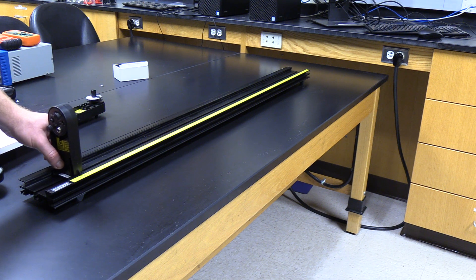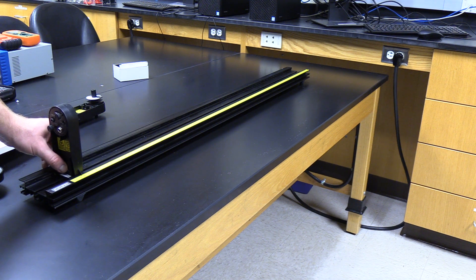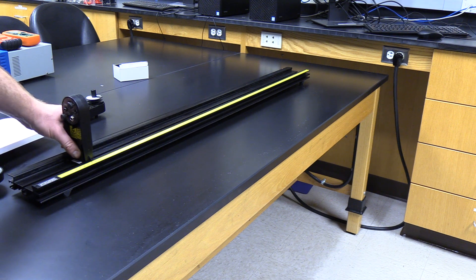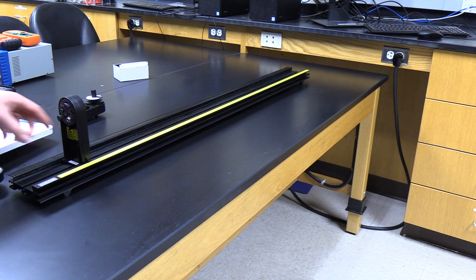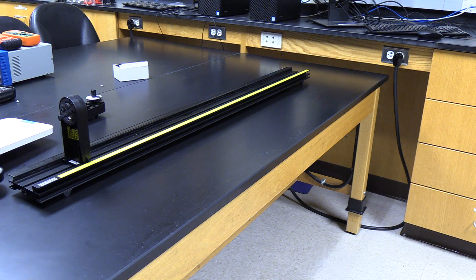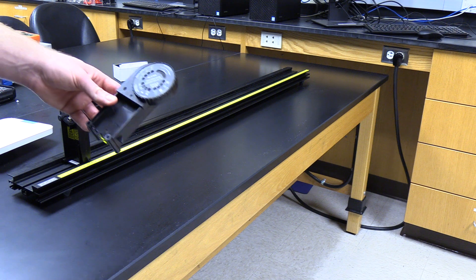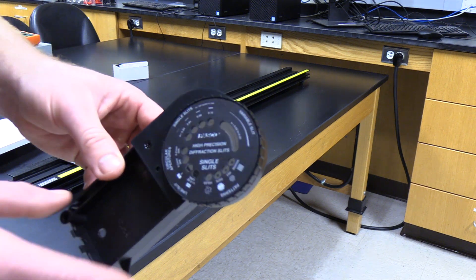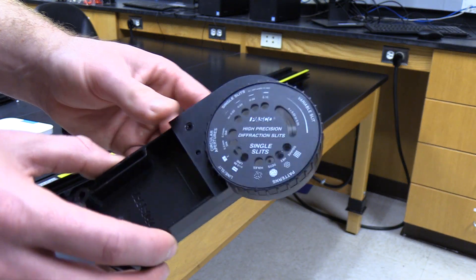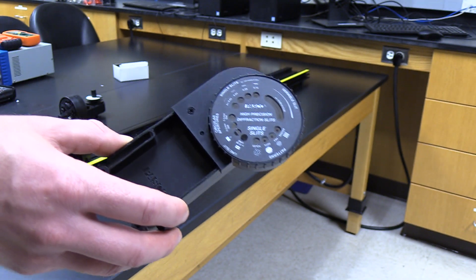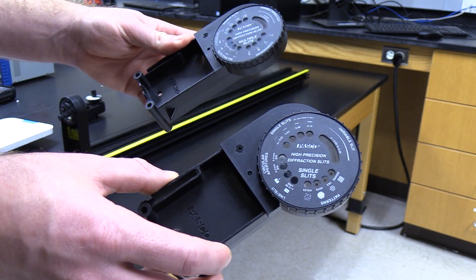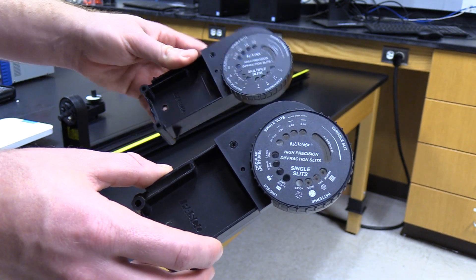I'll put the laser in the optical track, which lets us hold everything in place and measure distances easily. The next thing we need is a slit to shine the laser through. We have this wheel of single slits and some other fun shapes. We also have some double slits available to us.